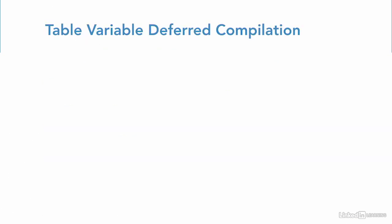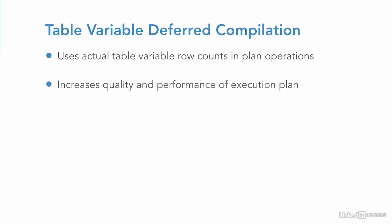With table variable deferred compilation, queries that include table variables are optimized by first identifying actual table variable row counts and then passing that value to downstream plan operations. This allows the execution plan to make better decisions and increases performance and quality when compared to the previous behavior of making a one row guess of the number of rows in a table variable. This deferred compilation behavior is now identical to the behavior of temporary tables.